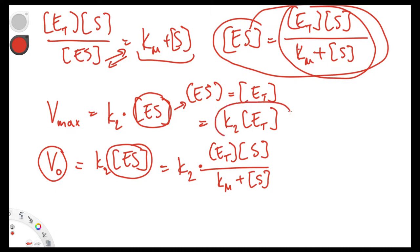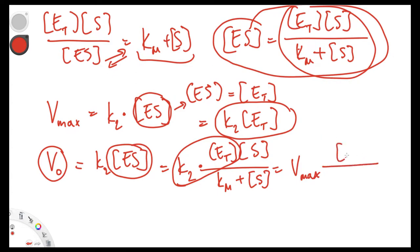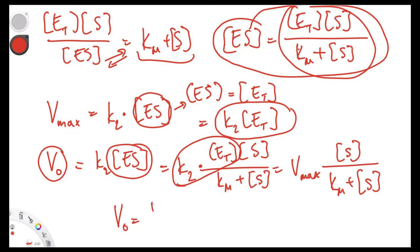We have obtained the Michaelis-Menten equation: V0 equals Vmax times the concentration of substrate divided by the Michaelis constant plus the concentration of substrate.